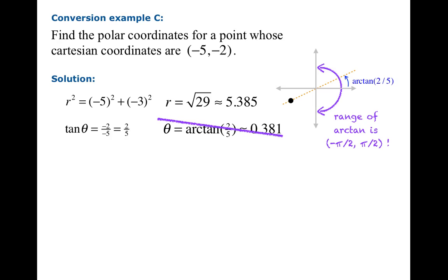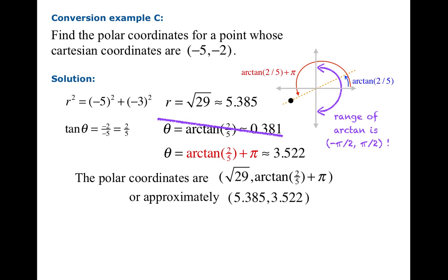So what we have to do here is actually manually add π to arctan(2/5) to get the correct angle. Now we've got it. The polar coordinates exactly are (√29, arctan(2/5) + π). Approximately they're equal to 5.4 and 3.5.